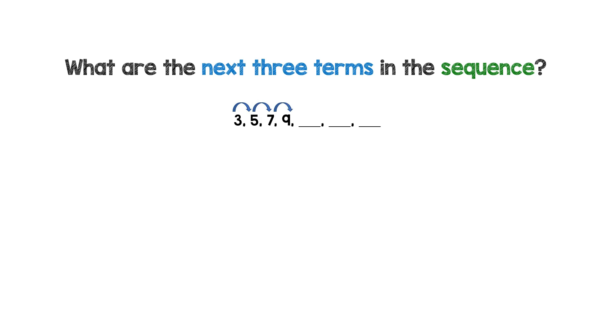From this observation, we can notice a certain pattern, and that is by adding 2. 3 plus 2 is 5, 5 plus 2 is 7, 7 plus 2 is 9.